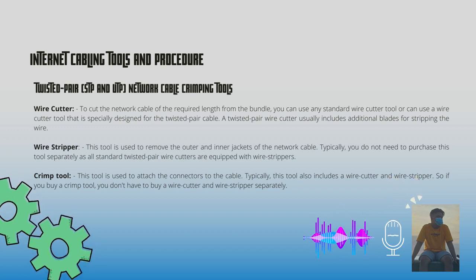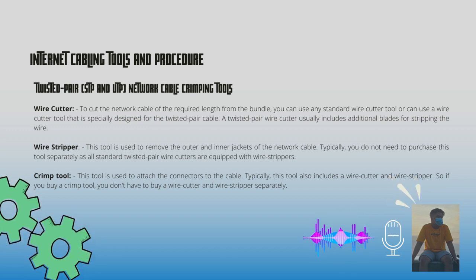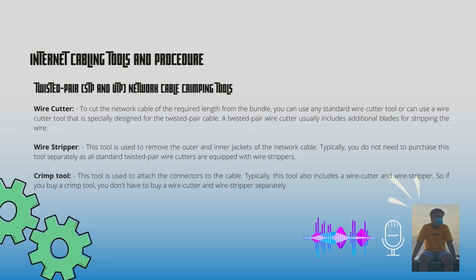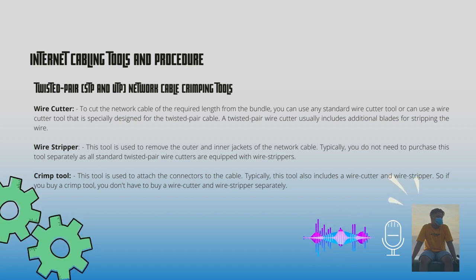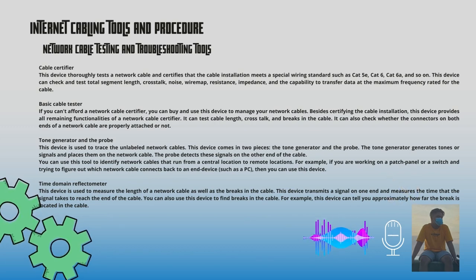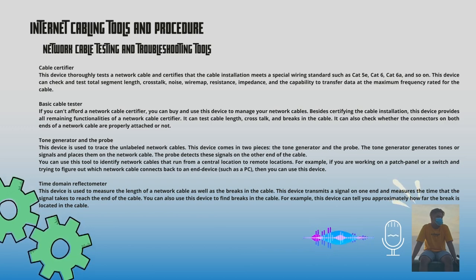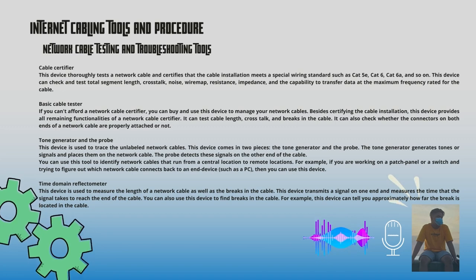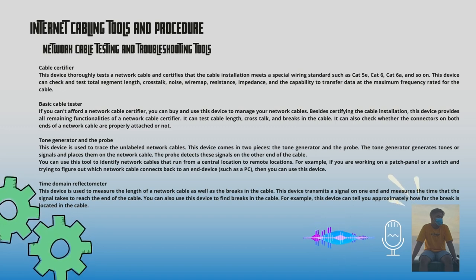A crimp tool is used to attach the connectors to the cable. It typically also includes a wire cutter and wire stripper, so if you buy a crimp tool you don't need to buy those separately. A cable certifier thoroughly tests a network cable and certifies that the installation meets a special wiring standard such as Cat 5e, Cat 6, or Cat 6a. It can check and test total segment length, crosstalk, noise, wire map, resistance, and the capability to transfer data at the maximum rated frequency.